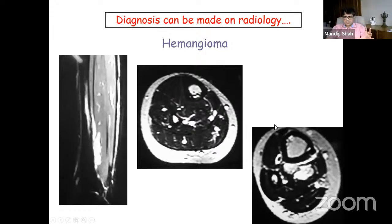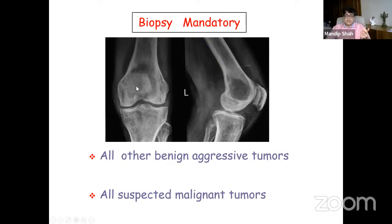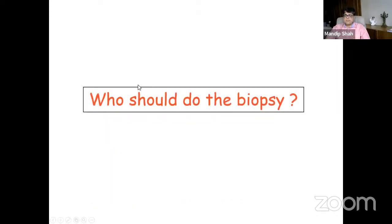Besides these five or six specific entities, all other benign aggressive lesions and all suspected soft tissue tumors must be biopsied. Even a lesion that looks like a benign giant cell tumor — middle-aged patient, lytic lesion, narrow zone of transition, homogeneous matrix — must be confirmed by biopsy before treatment. The key take-home message is: when you do a biopsy, you are not losing anything — you may gain a lot. That should be inculcated in your thinking.